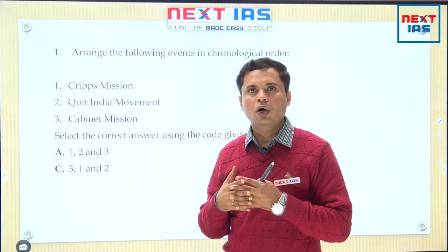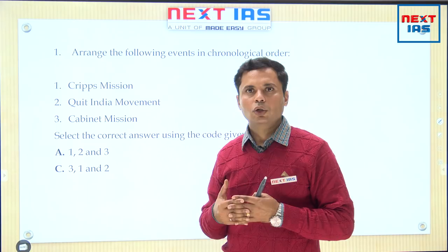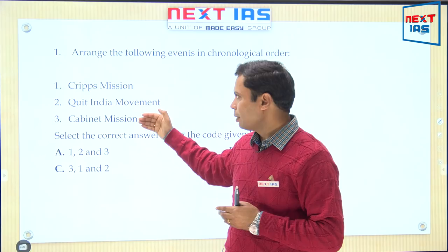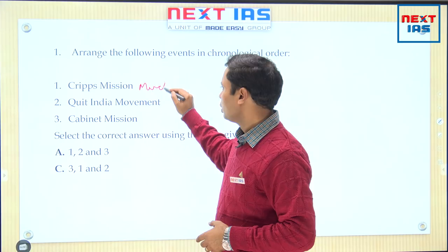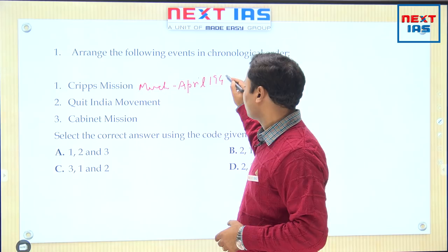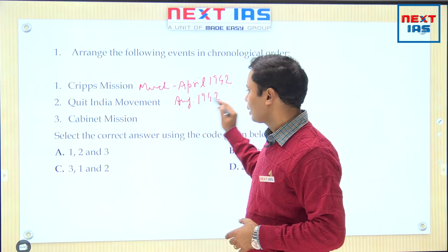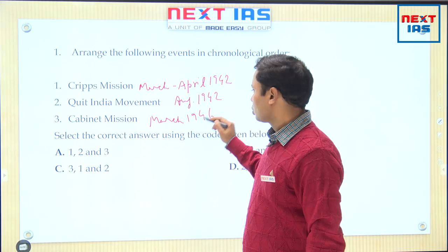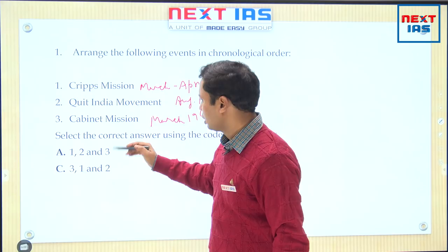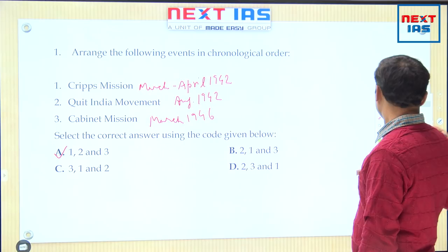In history, every year you will find one question on chronological ordering of different events, and UPSC demands you to put them in chronological order. Cripps Mission is in the month of March–April 1942; Quit India Movement is August 1942; and Cabinet Mission is in the month of March 1946. So the chronological order of the events will be 1, 2, and 3 — the answer will be A.